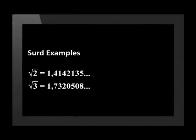Now that we've revised squared and cubed numbers, it's easier to understand a surd. A surd is the root of a number which can only be found approximately. So we say that the square root of a non-perfect square is a surd. Let us look at some examples.